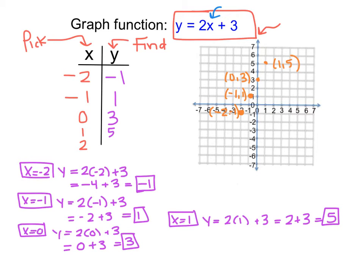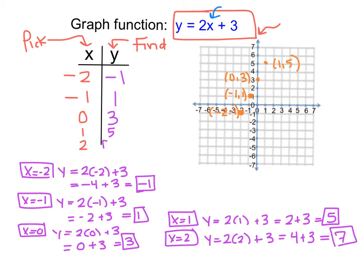Our last point is x equals 2. So y equals 2 times 2 plus 3, which is 4 plus 3 and equals 7. So we plot x is 2, y is 7. Now I have 5 nice points plotted and I can start to see the shape of that line. So I'm going to connect those dots in a linear fashion, and you can see my line right there.